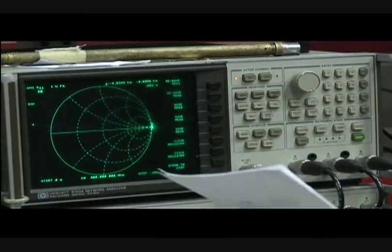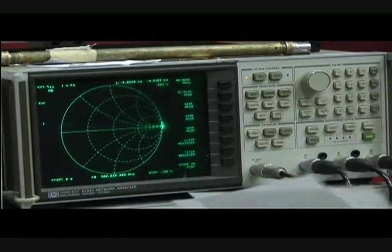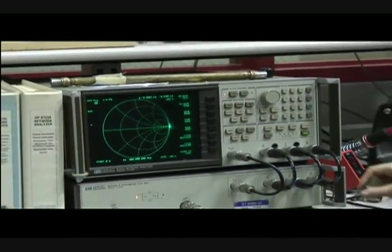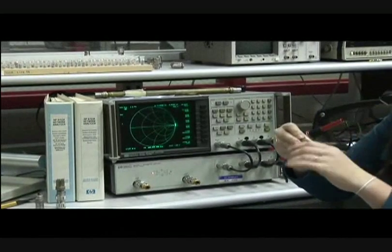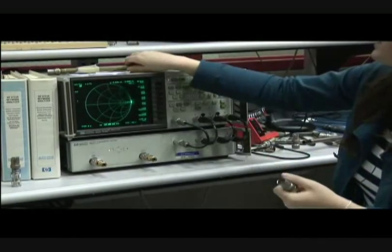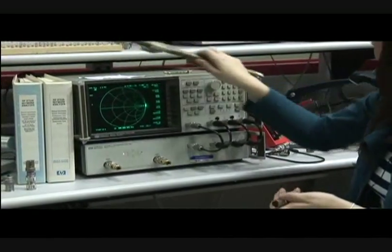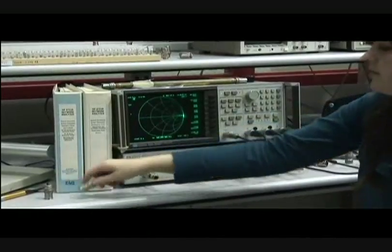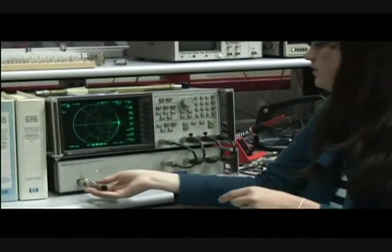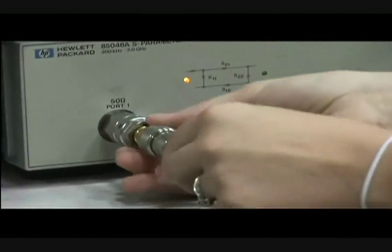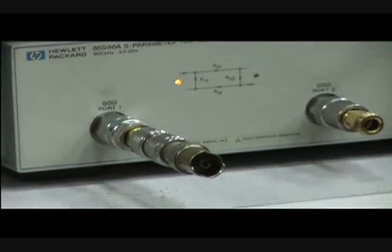So now we want to connect the 25 ohm resistor to the line. So I'm going to put on this connector right here to the 24 ohms. And I'm going to connect this connector to the output port here.